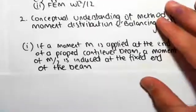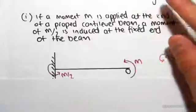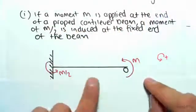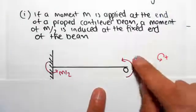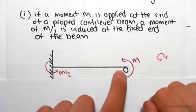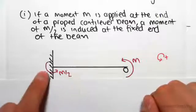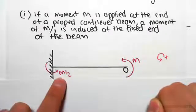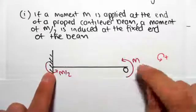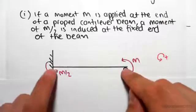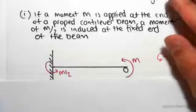The first piece of theory is that if a moment M is applied at the end of a prop cantilever, we're applying a moment M, a moment of M/2 is induced at the fixed end of the beam. So if we apply a moment M here, we get M/2 in the same direction. If this M is positive, we're going to get a positive M/2 on the other side. That's the first piece of theory.